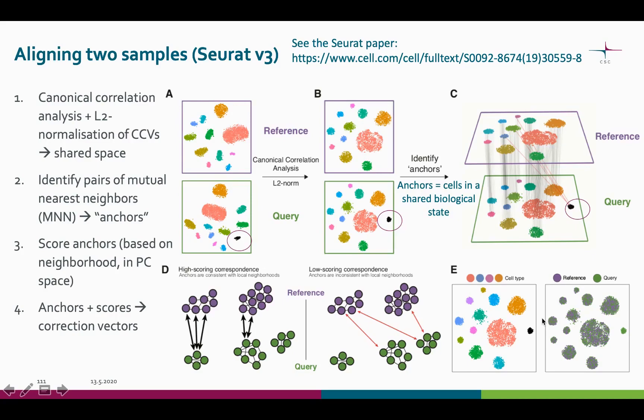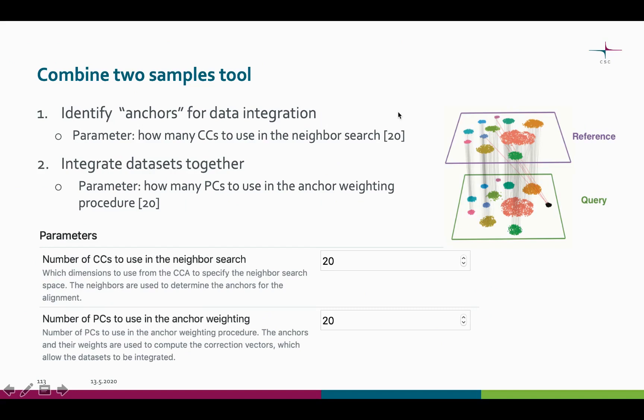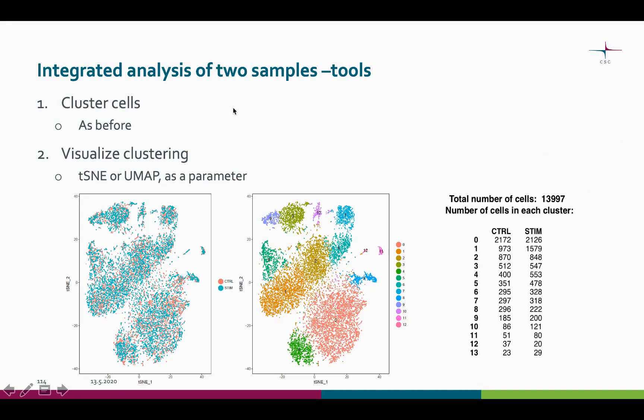The attempt here is to remove just the batch effect and make the comparison between the samples possible. In Chipster, we offer two parameters for this combination step. The first parameter, number of CCs to use in the neighbor search, is used in the anchor identification step. The second parameter gives the number of principal components to use in the anchor weighting process. Both have a default value of 20, and you can well start with those default values. After combining the samples, we cluster them and visualize the clusters, as we learned in the one-sample analysis pipeline. Here too, we have the same parameters for clustering and plotting.